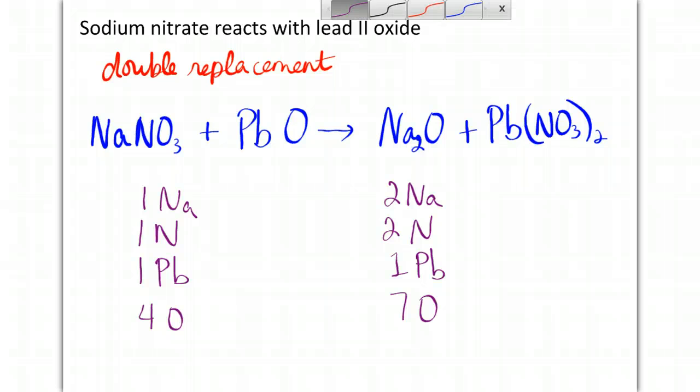And so I want to fix my sodiums first by placing a 2 here. That gives me 2 sodiums, 2 nitrogens, and 2, and 3 is 6, 7 oxygens. Did not change my lead, however. Still have 1 lead.